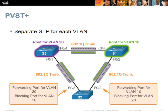The illustration on this slide shows an example of how all links can be used in PVST+. You can see that S3 is the root switch for VLAN 20, and S1 is the root switch for VLAN 10. Both ports on the link between them transmit data from both VLANs.